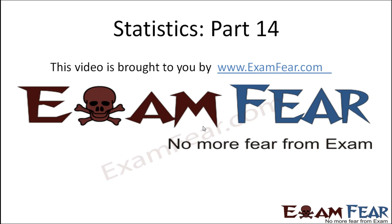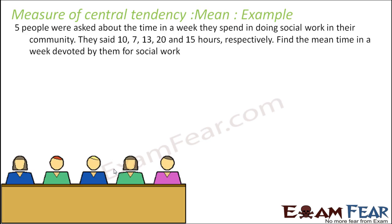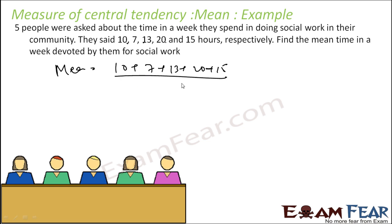Hello friends, this video on statistics part 14 is brought to you by examfier.com — no more fear from exam. Let's take one more example. Five people are asked about the time in a week they spend doing social work and they said 10, 7, 13, 20, and 15 hours. We have to find the mean time devoted. Mean is: add all the numbers — 10, 17, 13, 20, and 15 — there were five numbers, divide by 5. It is 65 by 5, which is 13 hours. So the mean time these people devote for social work in a week is 13 hours.